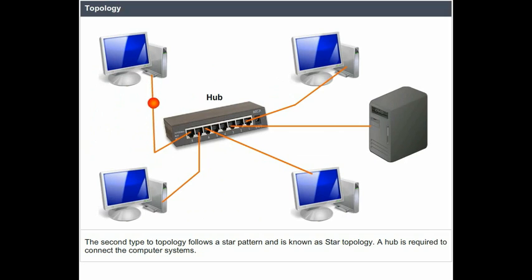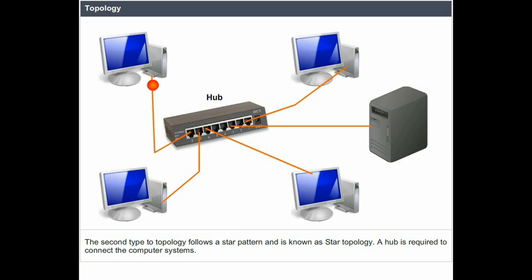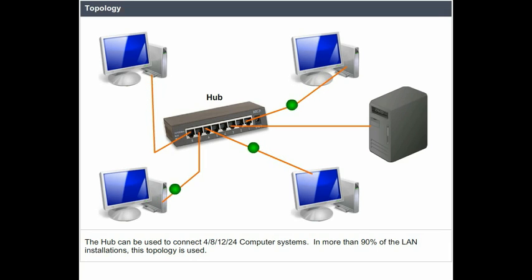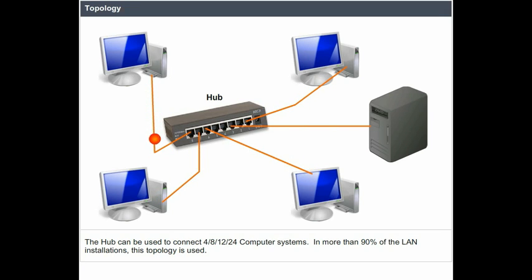The second type of topology follows a star pattern and is known as star topology. A hub is required to connect the computer systems. The hub can be used to connect 4, 8, 12, or 24 computer systems. In more than 90% of LAN installations, this topology is used.